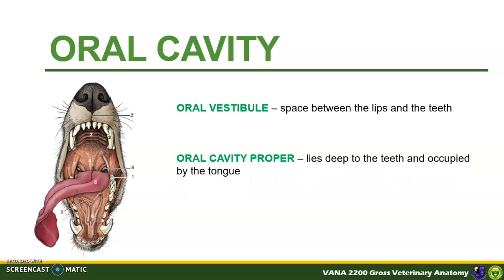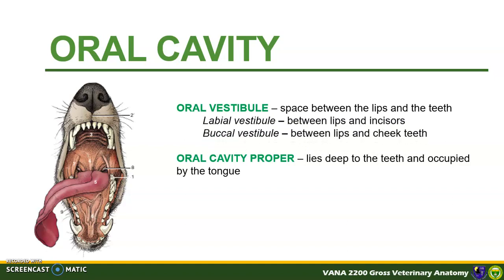The oral vestibule is the space between the lips and the teeth. It is further subdivided into a labial and a buccal vestibule.